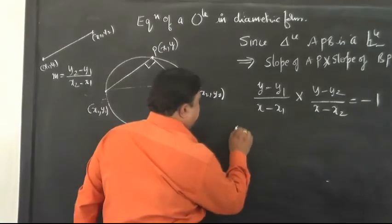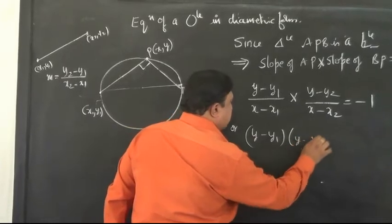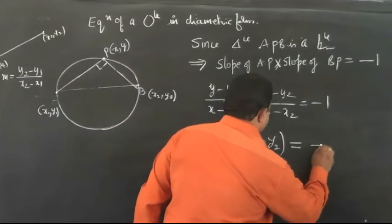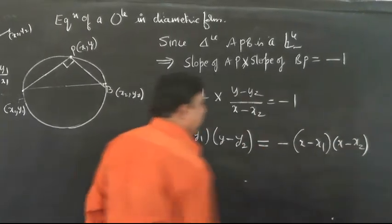Now I cross multiply and simplify. Y minus Y1 into Y minus Y2, the numerators have been multiplied, is equal to negative X minus X1 into X minus X2 after cross multiplication.